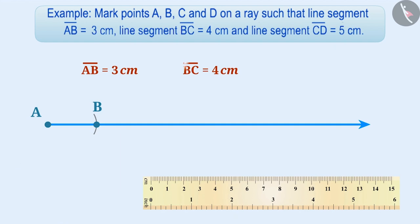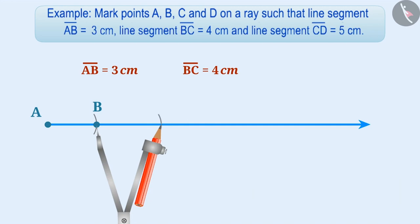Absolutely correct. Hence, BC is equal to 4 cm. Therefore, we take 4 cm measurement in the divider and measure 4 cm from point B on the ray. We will express this point as point C.